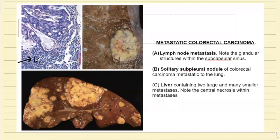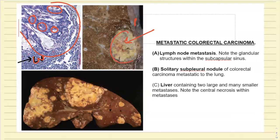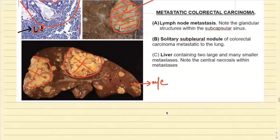The presence of lymph node metastasis, particularly regional lymph nodes, is also a poor prognostic factor. Liver, lungs, and bone may all be involved. The most common site of metastasis is the liver. One example shows a metastatic lymph node with gland formation — confirming it as colorectal carcinoma. Another shows pleural metastasis as a nodule just below the pleura. The liver shows multiple metastatic deposits, confirming it as the most common site of metastasis of colorectal carcinoma.